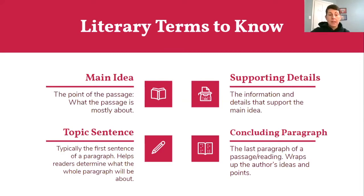A topic sentence is typically the first sentence of a paragraph. It helps readers determine what the whole paragraph will be about. And the concluding paragraph is the last paragraph of a passage or reading — it wraps up the author's ideas and points. We'll talk more about topic sentence and concluding paragraph on Tuesday and Wednesday, and then again on Friday.